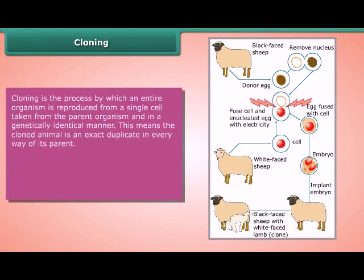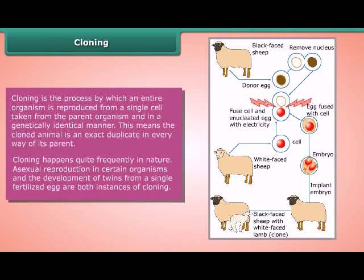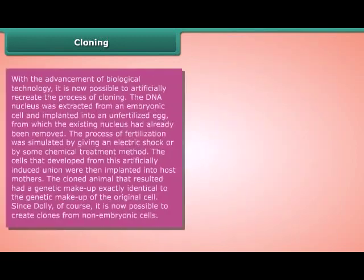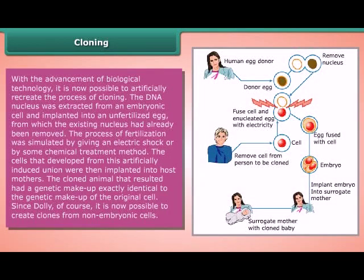Cloning is the process by which an entire organism is reproduced from a single cell taken from the parent organism in a genetically identical manner. This means the cloned animal is an exact duplicate in every way of its parent. Cloning happens quite frequently in nature. Asexual reproduction in certain organisms and the development of twins from a single fertilized egg are both instances of cloning. With the advancement of biological technology, it is now possible to artificially recreate the process of cloning.